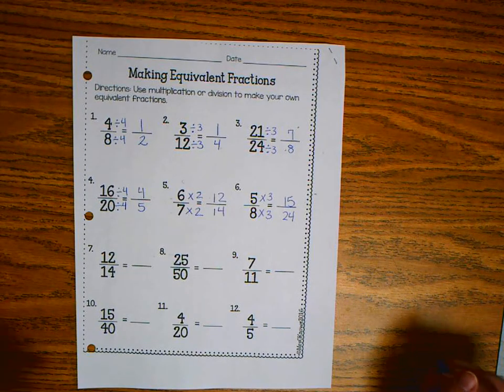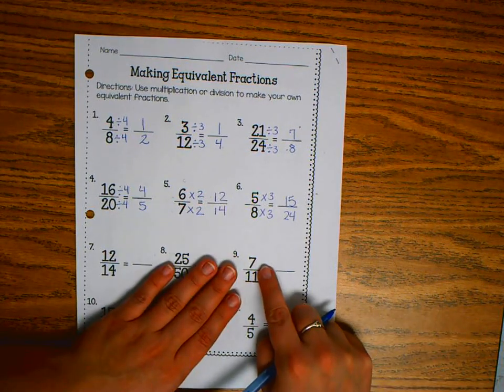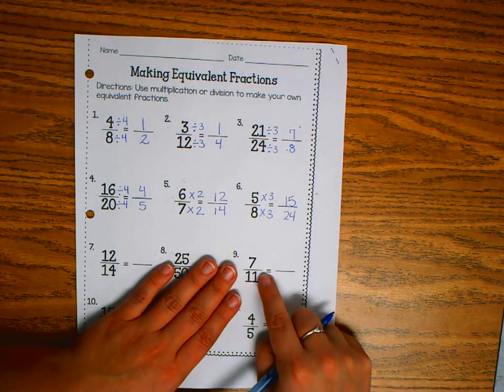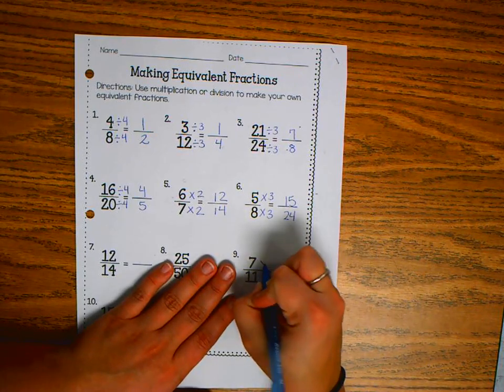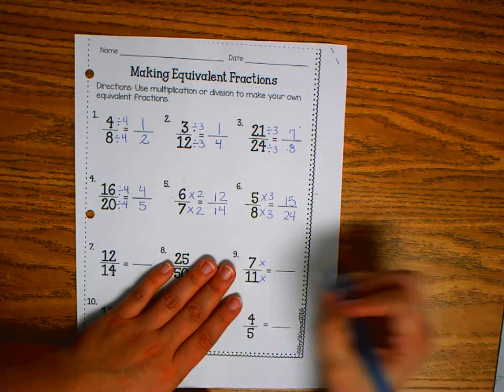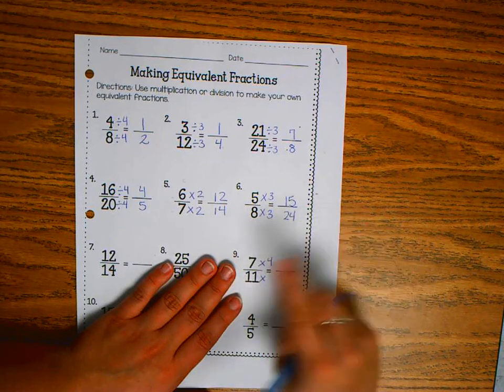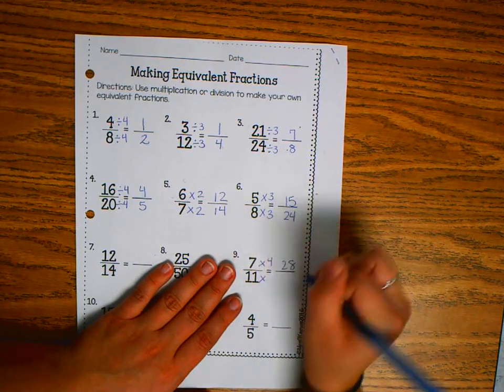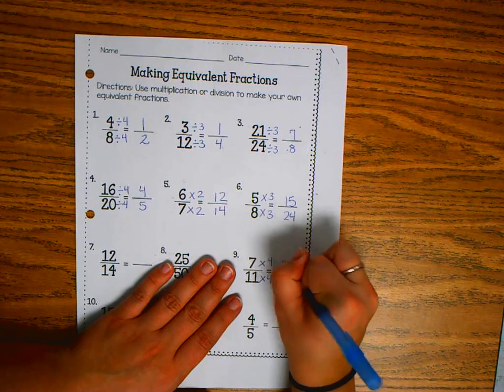And I can continue this pattern. So we'll look at this one. 7 and 11, there's nothing that I can divide by both of those, but I can multiply. I'll multiply by 4. 7 times 4 is 28. And 11 times 4 is 44.